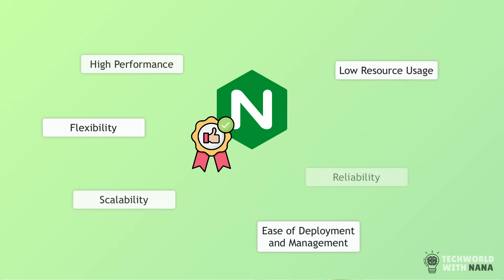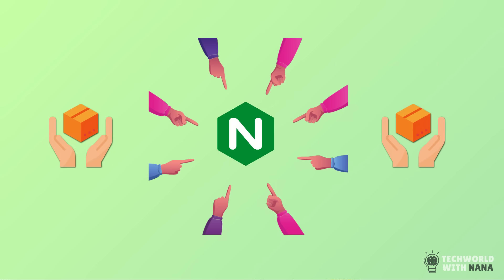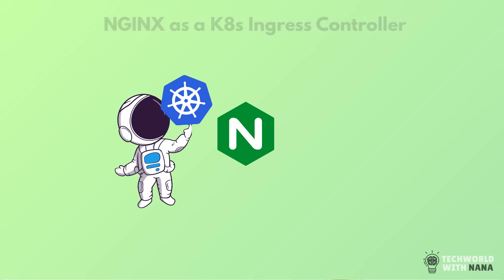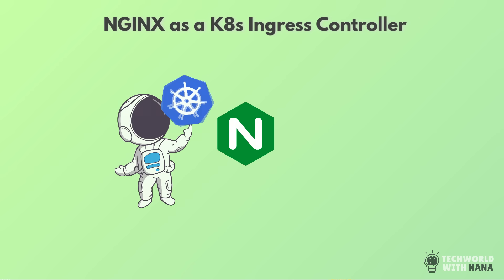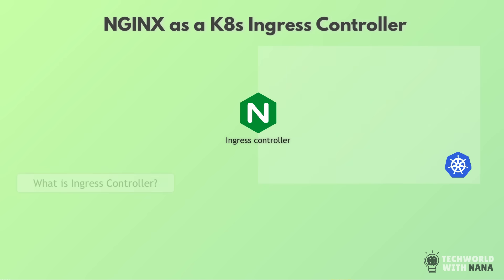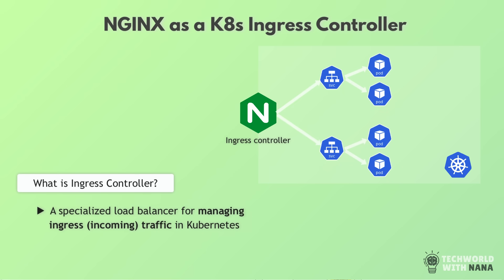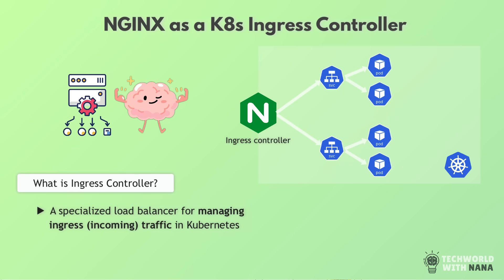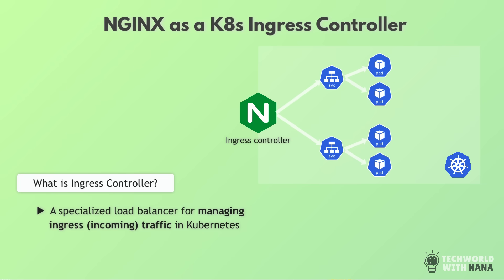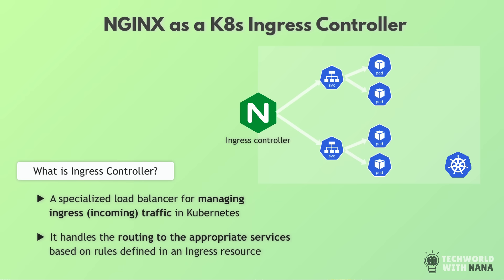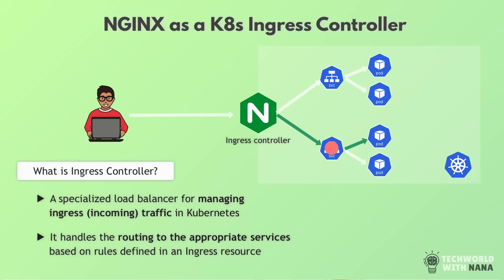Nginx is very flexible and super fast, so it became very popular in containers as well and made its way as one of the most popular solutions for Kubernetes Ingress controller functionality. An Ingress controller is essentially a proxy with advanced load balancing functionality, but for Kubernetes. What Nginx was doing for simple web servers, it's now doing for Kubernetes clusters in the form of an Ingress controller — acting as a proxy and load balancer that receives incoming traffic first, then based on the defined configuration, forwards it to the right service inside the cluster.